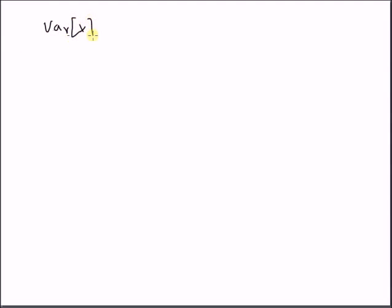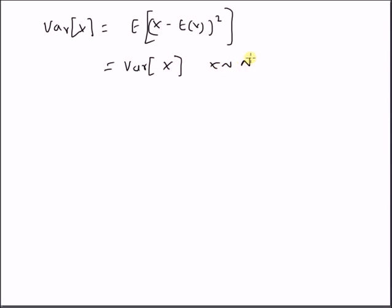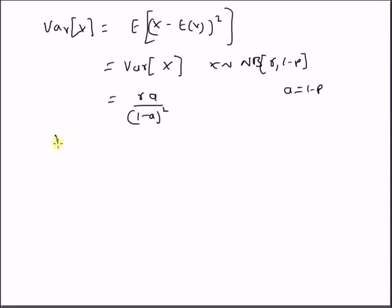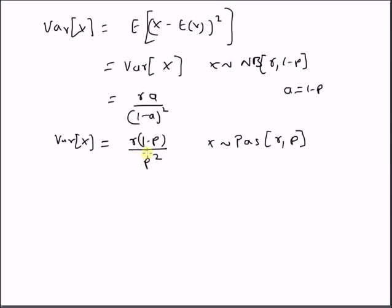Finally, let us look at the variance of the Pascal distribution. The variance of the random variable x equals the expectation of (x minus expectation of x) squared. This is the variance of a random variable following the negative binomial distribution with parameters r and 1 minus p. The variance of a negative binomial distribution with parameters r and a is equal to r times a divided by (1 - a) squared. Since a equals 1 minus p, the variance of the Pascal distribution is equal to r times (1 - p) divided by p squared, where x follows a Pascal distribution with parameters r and p.